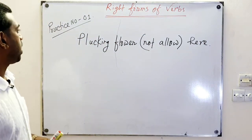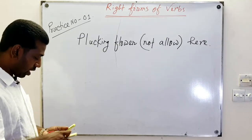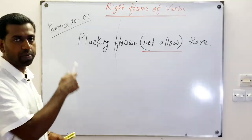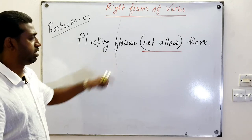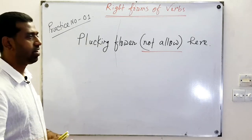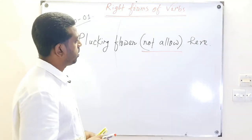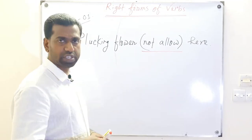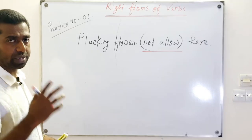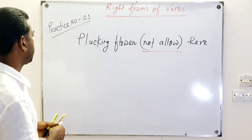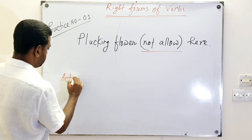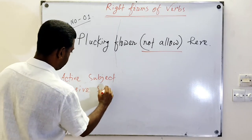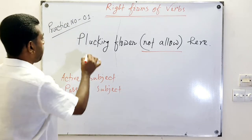Our practice number one is: 'plucking flower not allow here.' How will you solve this problem? What is the way you will follow? To solve this problem you have to remember two important things about subjects. Subjects are basically of two types: number one, active subject, and number two, passive subject.